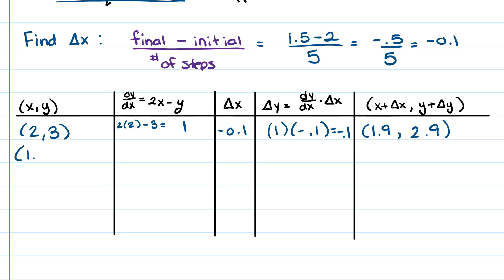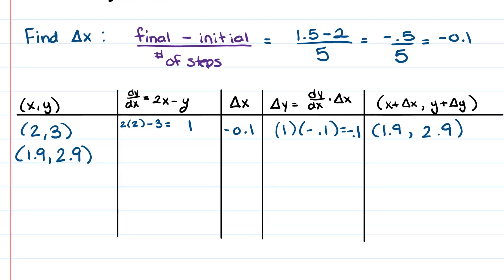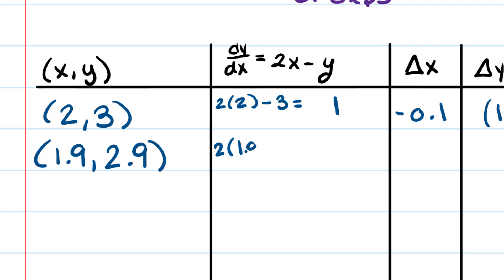So our new point is going to be (1.9, 2.9). And you're going to repeat this process until you've filled out the entire table. So I'll do one more. It's going to be 2 times 1.9 minus 2.9, which is going to give me 0.9.